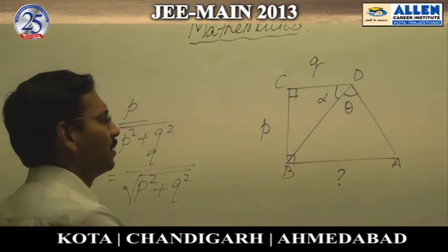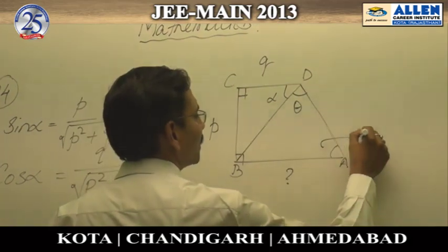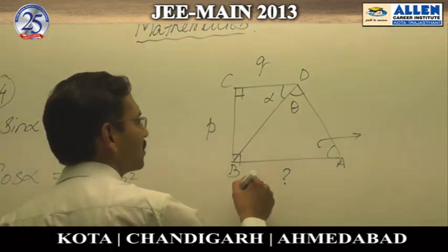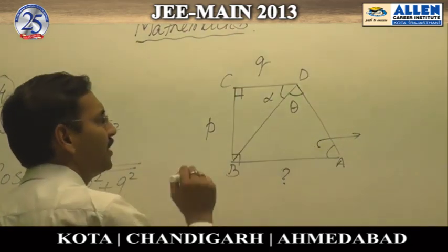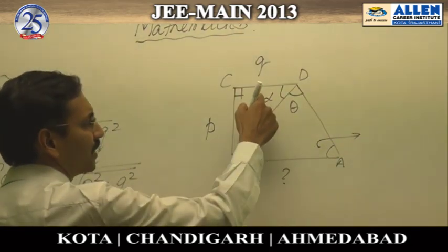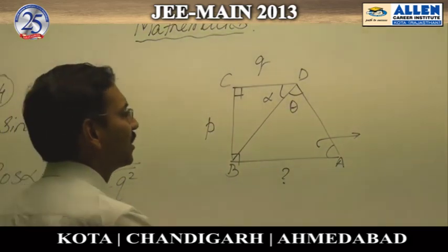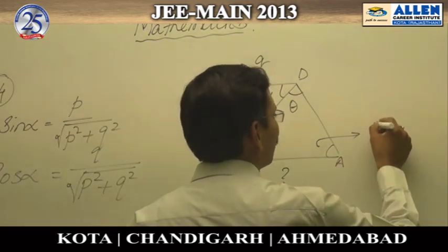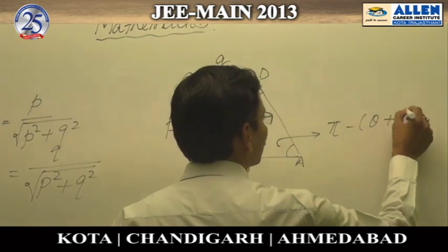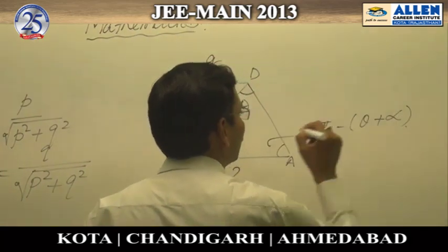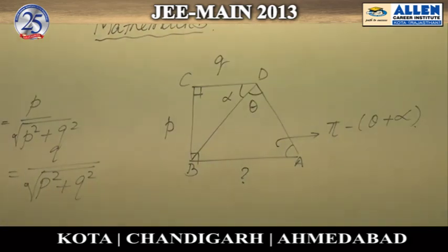Now, considering the angles in the trapezium: since the two base angles are 90 degrees, angle ADB is theta plus alpha. So the last angle, angle DAB, will be pi minus (theta plus alpha), as the sum of all angles should be 360 degrees.